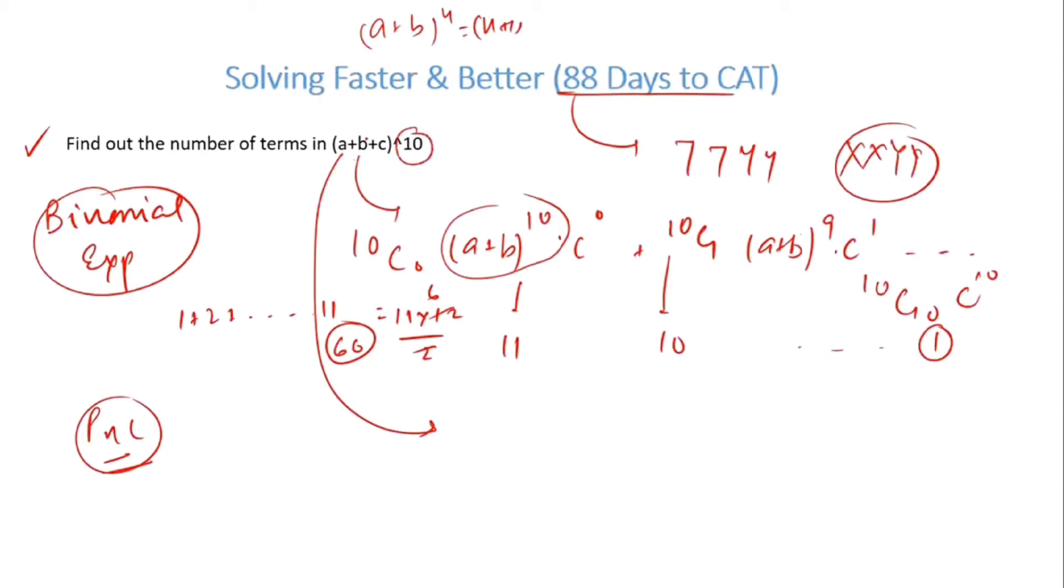Now what happens in a general term: in a general term you will have the power 10 distributed over a, b, and c. Therefore, the sum can be solved and written as x + y + z = 10. So I have to distribute 10 into three parts, into three integers, and one of them can be zero also.